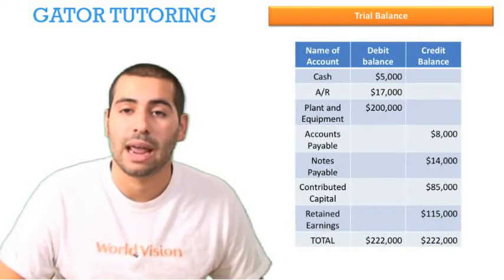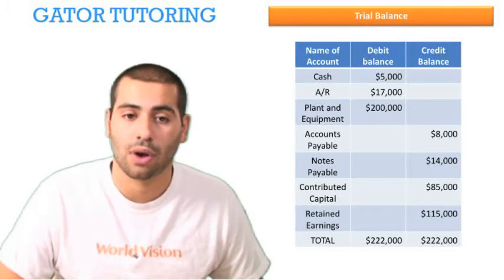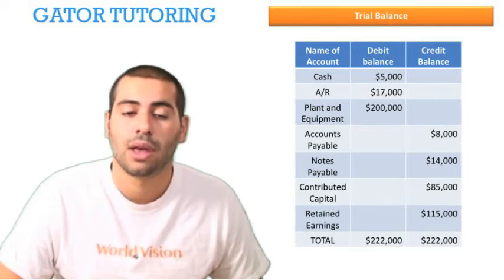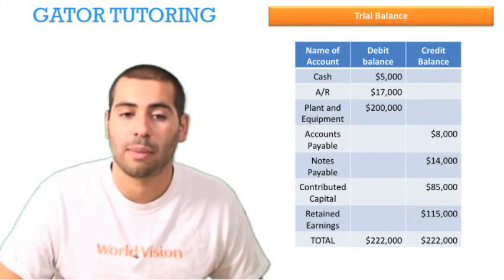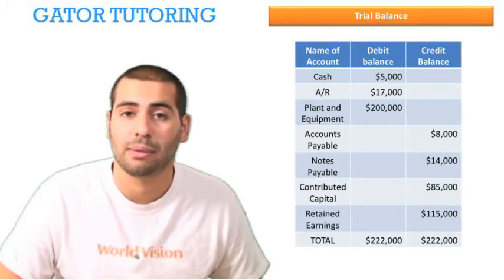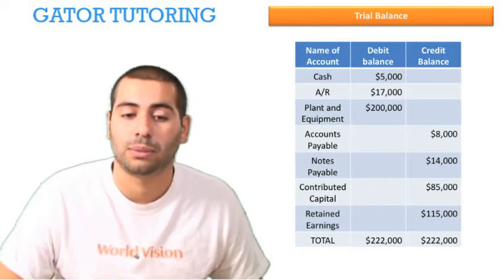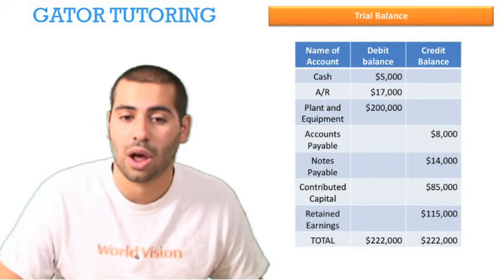Here you have the name of the account in the left column, in the middle column you have the debit balance of that account, and in the right column you have the credit balance of that account. Cash here has a $5,000 debit balance, accounts receivable has a $17,000 debit balance, and plant equipment has a $200,000 debit balance. That sums up to $222,000.